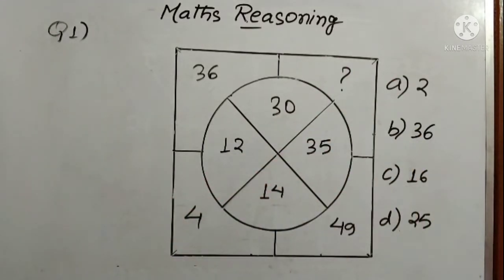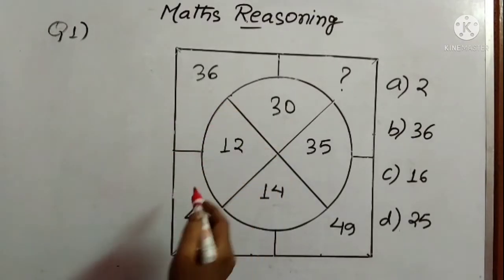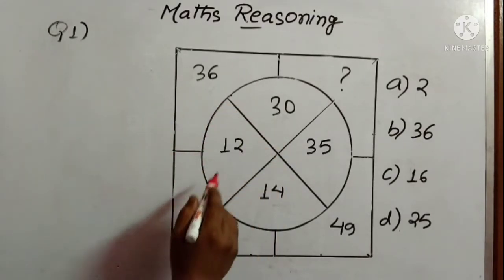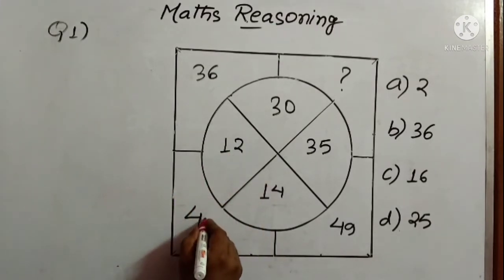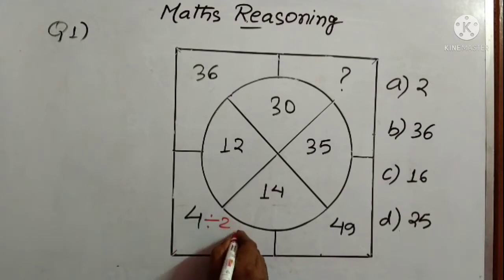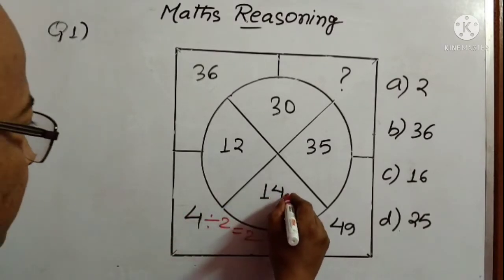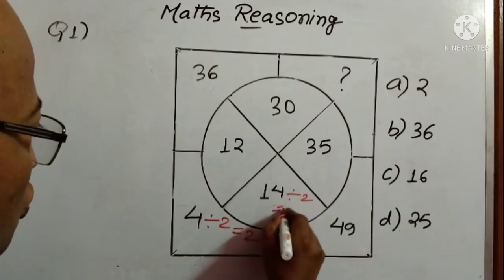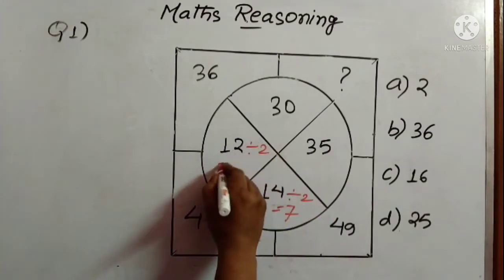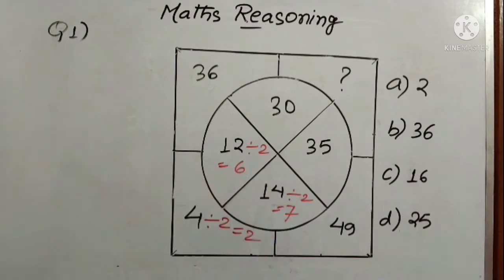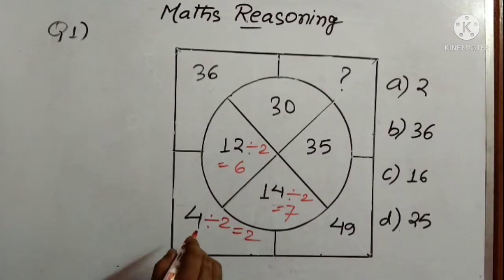We will solve it. In this segment we have 4, 12 and 14. What we are observing is that 4 is divisible by 2, so we are getting 2 as the result. 14 is again divisible by 2, so 7 is the result, and 12 is again divisible by 2, we are getting 6. So all these three numbers are divisible by 2.